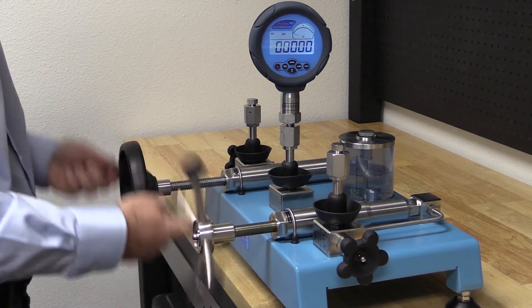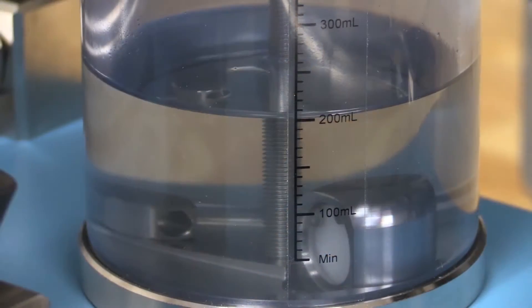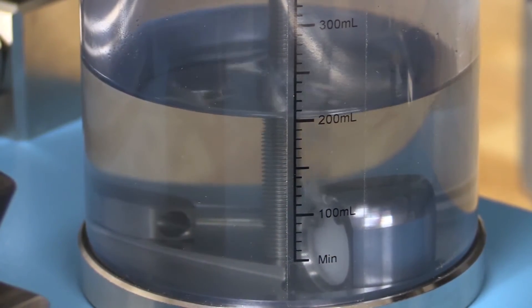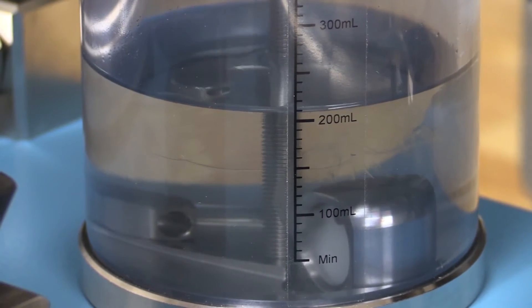Now with the vent valve left open, we will turn the two screw presses all the way in. If you have gas still in the system, you'll notice bubbles coming into the liquid reservoir as you turn in the screw presses.